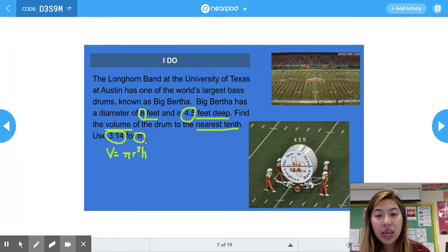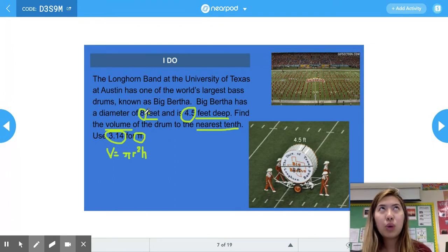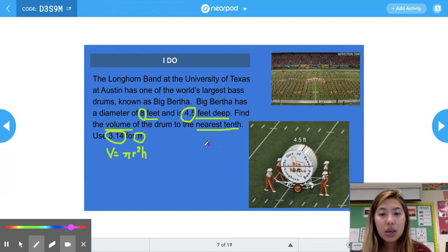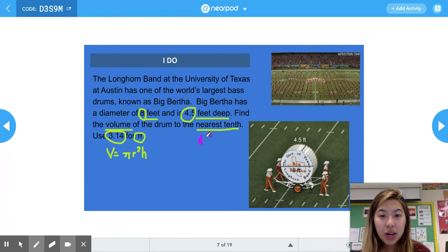Then we can figure out what the radius is. Usually we would be able to plug in the radius if the problem gave it to us, but in this case they gave us the diameter. If our diameter is 8 feet and our diameter is twice as big as our radius, that means our radius has to be half of that. So half of 8 is 4.